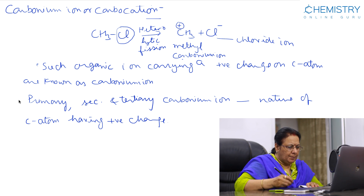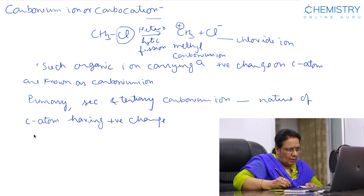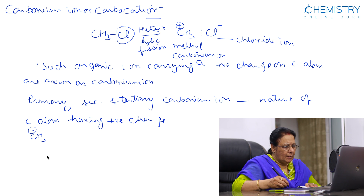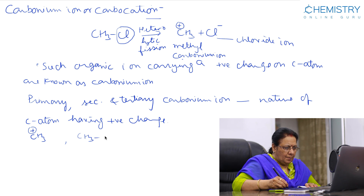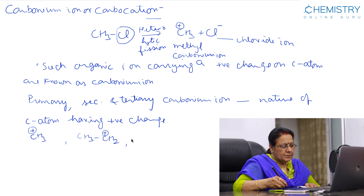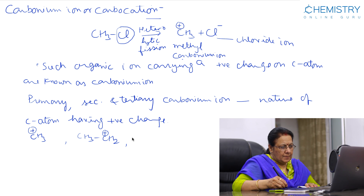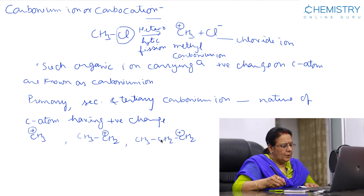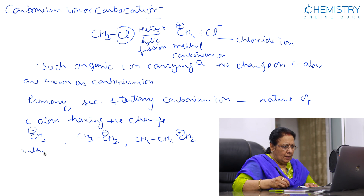Some examples of primary, secondary, and tertiary carbonium ions are as follows. When the positive charge is present on a primary carbon atom, then this carbonium ion is a primary carbonium ion. A primary carbonium ion is one where the carbon atom bearing the positive charge is a primary carbon atom — that is, a carbon atom attached to only one other carbon atom, or no other carbon atoms.